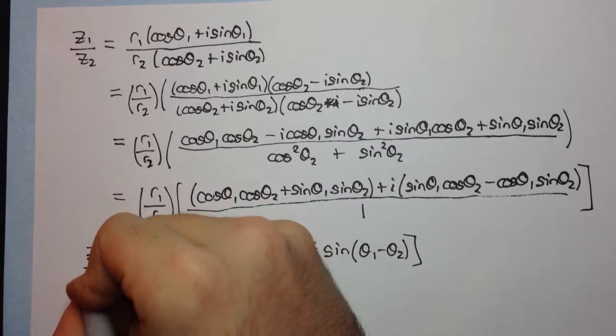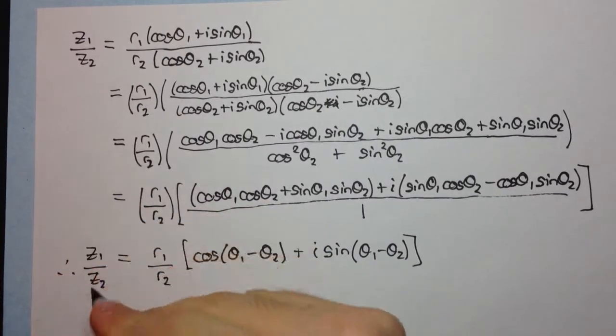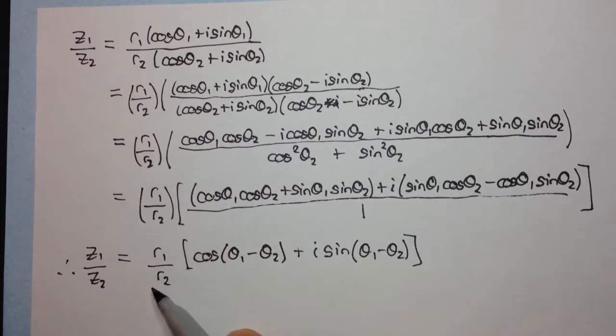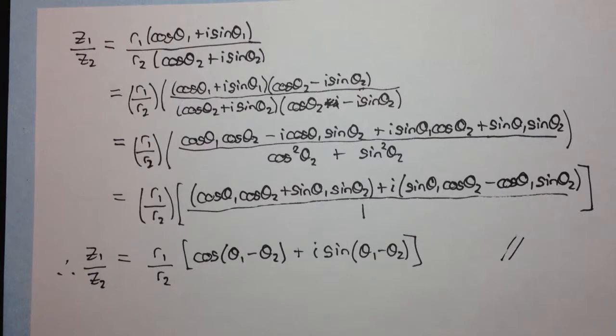And so therefore we have the quotient of the two complex numbers is the quotient of their moduli and the arguments are subtracted. And that is the end of the proof for this formula.